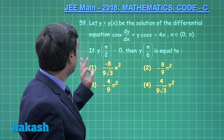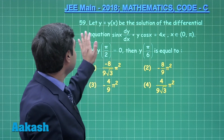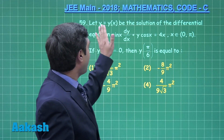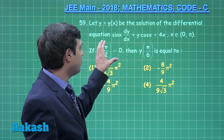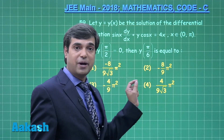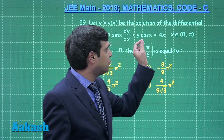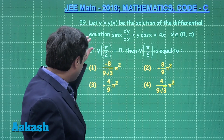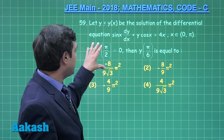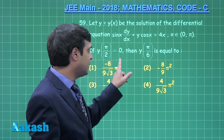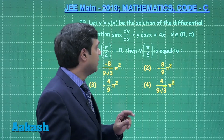Move to question number 59. The differential equation given is: let y = y(x) be the solution of the differential equation sin(x)·(dy/dx) + y·cos(x) = 4x. The condition given is y(π/2) = 0. We have to find the value of y at x = π/6.